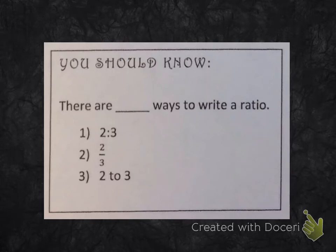You should know that there are three ways to write a ratio. So in our example of the ratio of stars to circles, we could write 2 to 3 like this with a colon in between, 2:3. A ratio can be written as a fraction, 2 over 3, or we could write 2 to 3 with words.